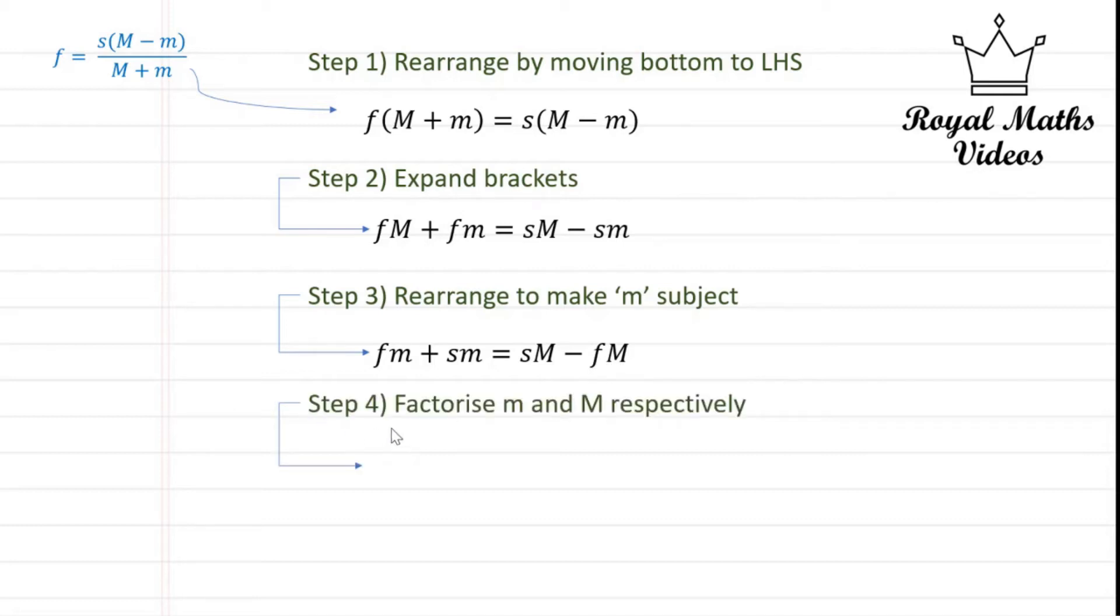Step four is to factorize m and both m's respectively. Now that we have them both on each side it's a lot easier to factorize them out to further simplify the expression.